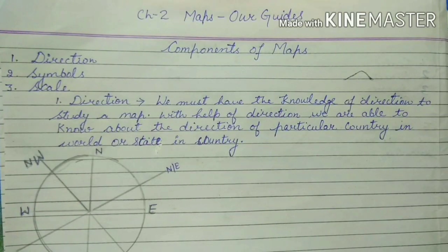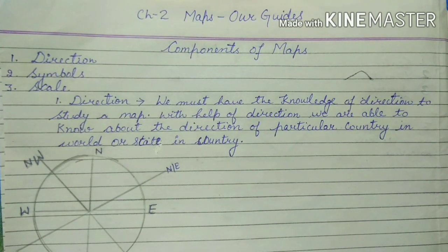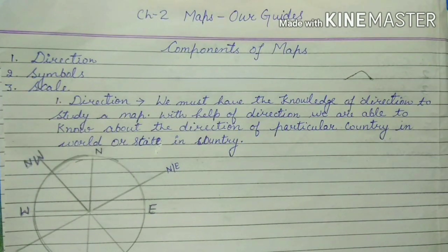Good morning everyone. Today we will study chapter 2 and its topic: components of map. There are three components of a map — direction, symbols, and scales.